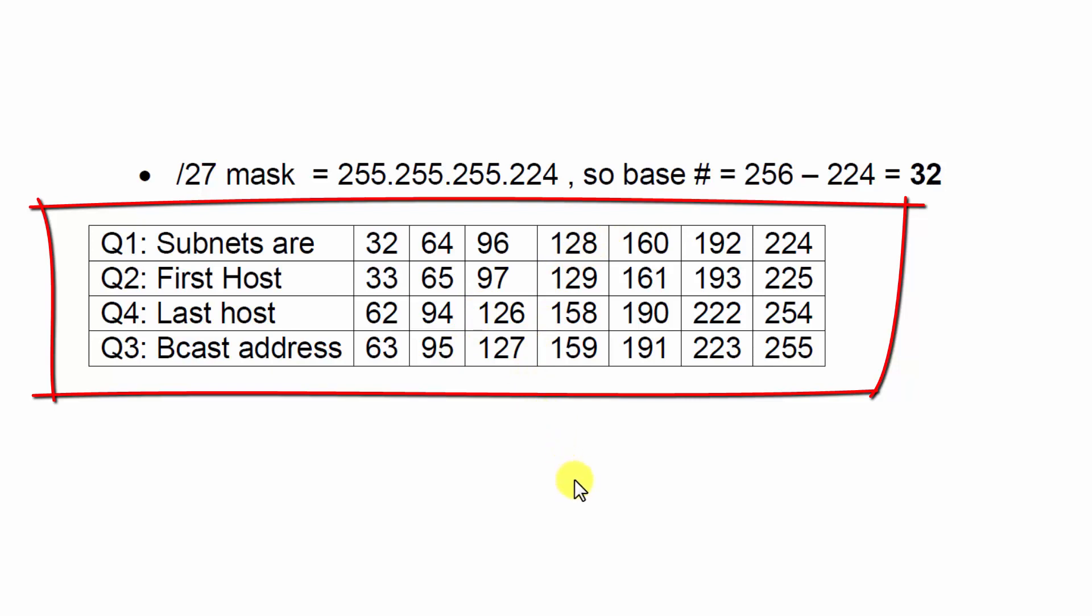And the last host is going to be one less than the broadcast address. So, 63 minus 1 is 62. 95 minus 1 is 94. 127 minus 1 is 126.